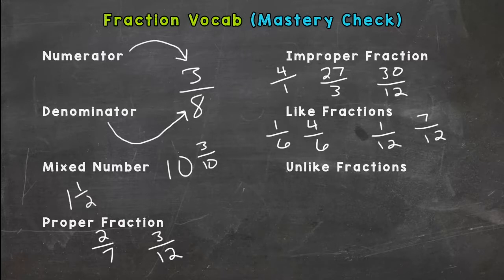Unlike fractions means the denominators are different. So three-sevenths and four-fifteenths. Or let's do three-ninths and 17 over 21. Those would be unlike fractions as well.